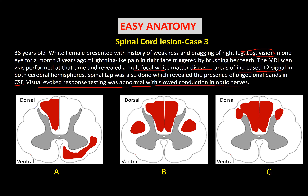Visual evoked response testing was abnormal with slow conduction in the optic nerve. When you look at this case, you find that there are clinical manifestations from right and left — it's not homogeneous, not symmetric. There is weakness and sensory problem, not only motor but also sensory, in the right leg. There is also a vision problem and severe pain in the face — facial or trigeminal pain — so we jump from the leg to the facial area.